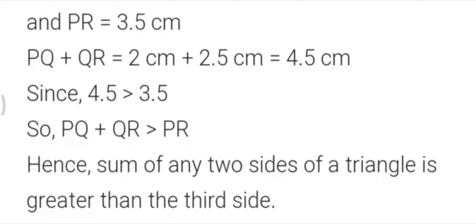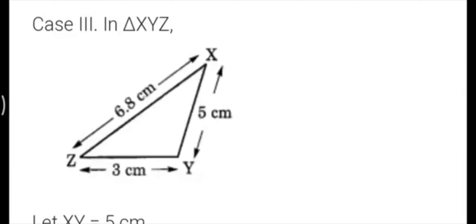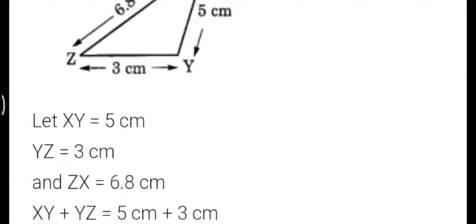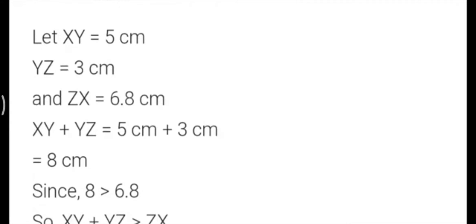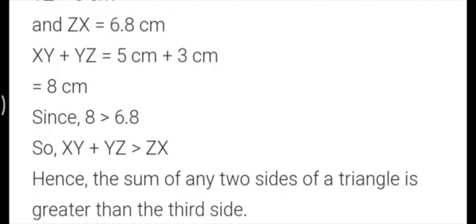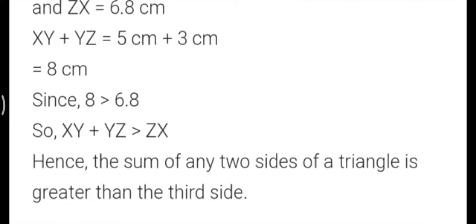Now case 3. This is the third triangle I have drawn, named XYZ. When I measure this: XY is 5 cm, YZ is 3 cm, and ZX is 6.8 cm. After adding XY plus YZ, it is 5 plus 3 equals 8. You can again see the sum of two sides, 8, is greater than the third side ZX which is 6.8. Hence the sum of two sides is greater than the third side.